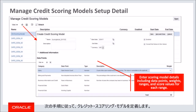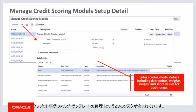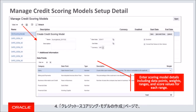Follow these steps to define credit scoring models. Search for the setup task manage credit scoring models. You can also search for the task list called define credit management configuration, which contains two tasks: manage credit scoring models and manage credit case folder templates. On the manage credit scoring models page, click the add icon to go to the create page, then enter the scoring model details and save the changes.